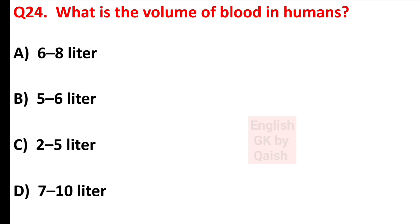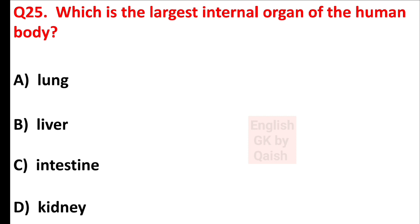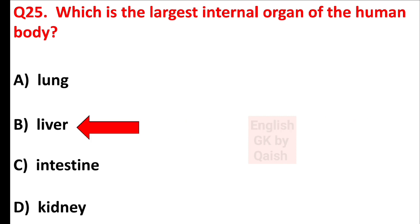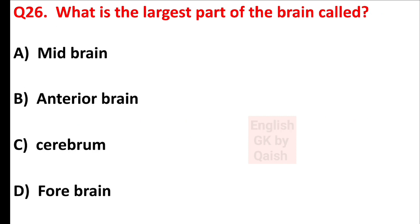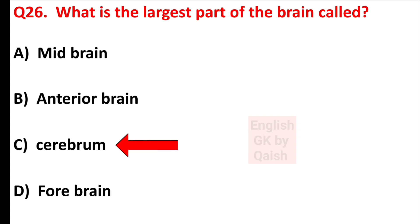What is the volume of blood in humans? Answer is option B — 5 to 6 liters. Which is the largest internal organ of the human body? Answer is option B — liver. What is the largest part of the brain called? Answer is option C — cerebrum.